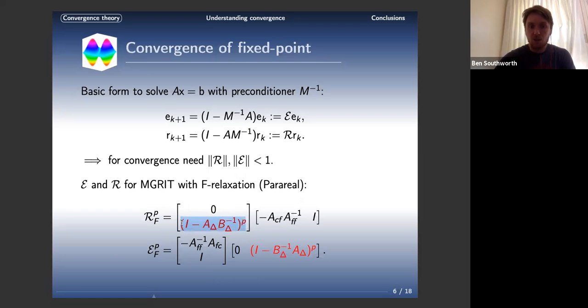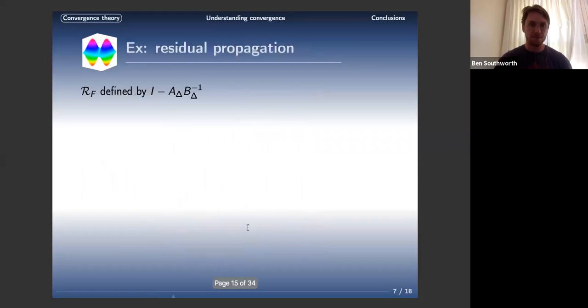When we look at convergence, this is really all that's defining convergence. Same with error, but it's the other side. These other operators are small in norm, and at the end of the day, they're not really going to affect our convergence. The only thing that matters is this. We need this to be less than 1 in norm for a convergent method. So we're going to look at residual propagation just as an example. It's defined by this operator. That's what we need for a convergent method.